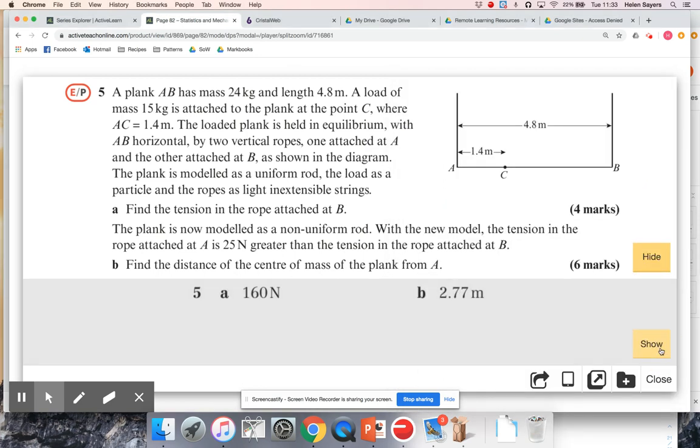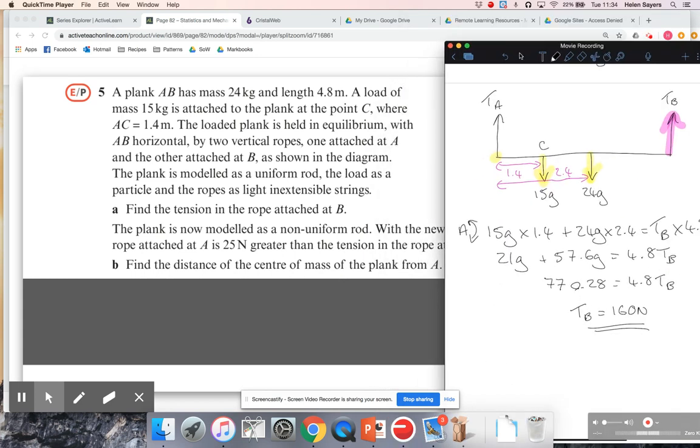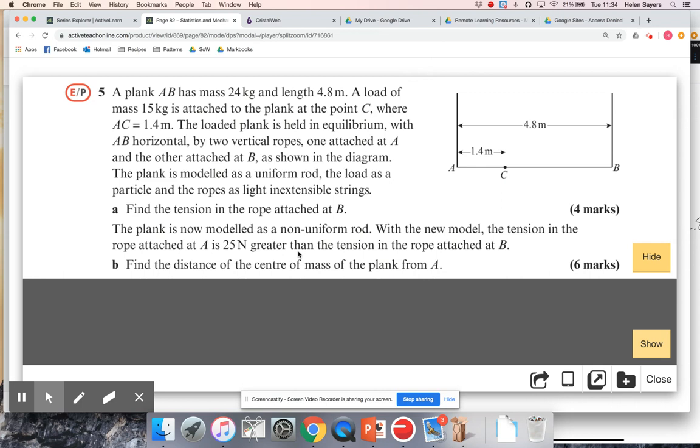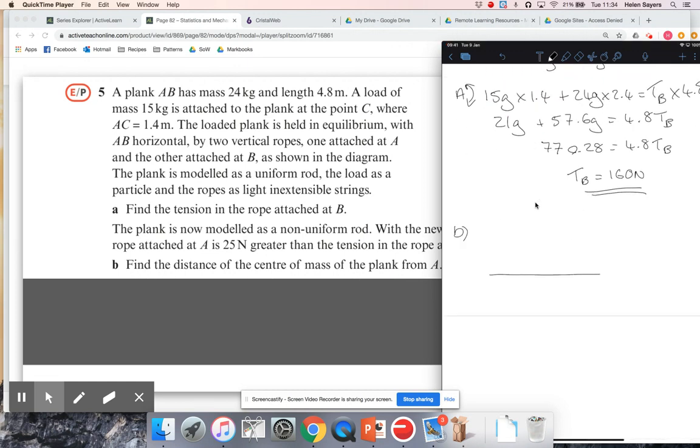I'm just going to check that before we carry on. Yeah, we're good. Okay, so let's just go back to that. So yeah, there was nothing to say that you couldn't just leave in terms of G for that. Okay, so the plank is now modeled as a non-uniform rod. With the new model, the tension in the rope at A is 25 newtons greater than the tension in the rope at B. I think this calls for a fresh diagram. Okay, so I've still got the tensions in the two ropes. I've still got the 15 kilogram mass, but now I no longer know that the actual mass of the rod is working halfway along it. In fact, it's not going to be halfway along it.